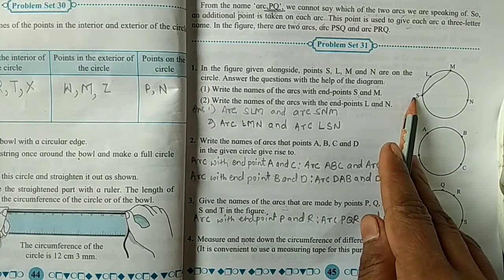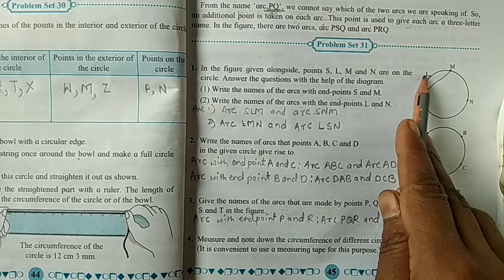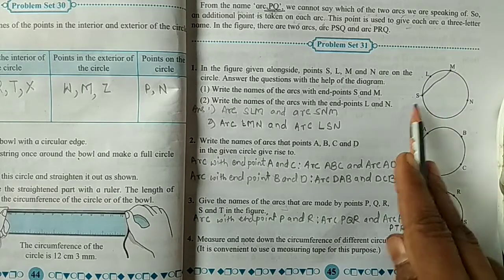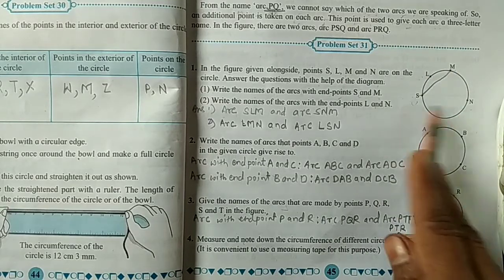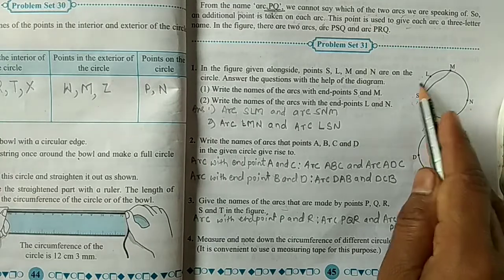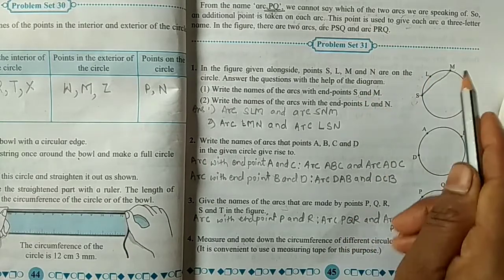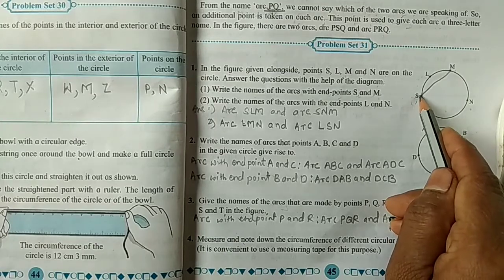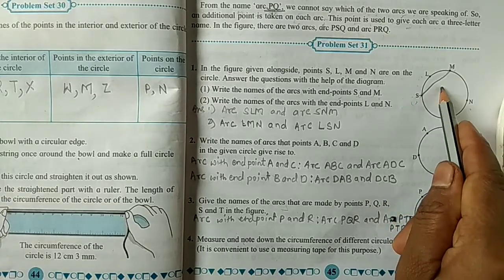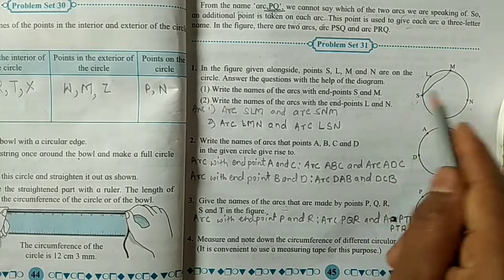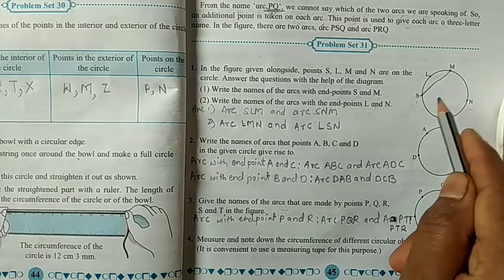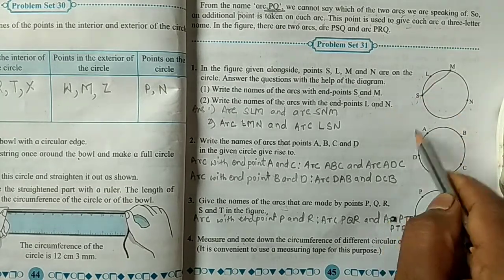So the first arc name is arc SLM and the second arc is SNM.